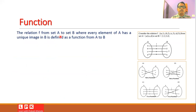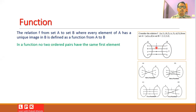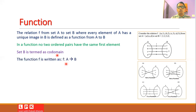Now let us go for the definition of a function. The relation f from set A to set B, where every element of A has a unique image in B, is called a function from A to B. In a function, no two ordered pairs will have the same first element; they can have the same second element, but the first element must be unique for each ordered pair. Set B is termed as the co-domain, and we write the function as f: A → B.